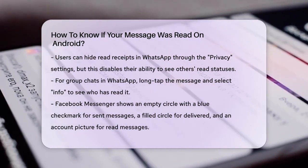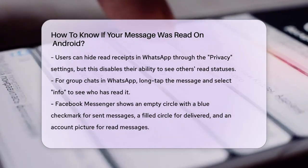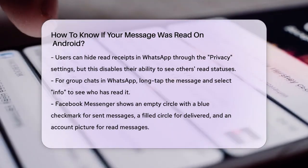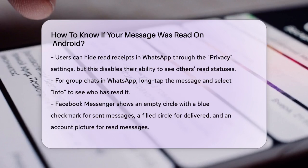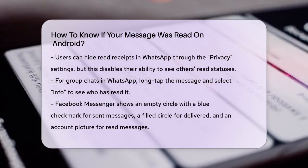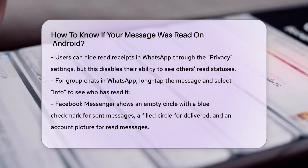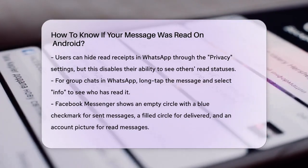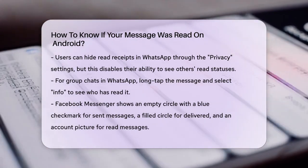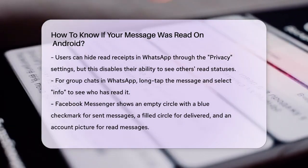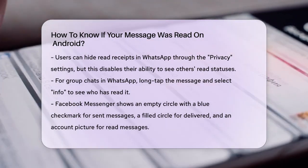Facebook Messenger also provides read receipts. Here's how it works. An empty circle with a blue checkmark indicates a sent message. A filled circle means the message has been delivered to the recipient's inbox. When the recipient reads your message, the filled circle is replaced by a tiny account picture. You can tap on the message to check its status and the time it was read.